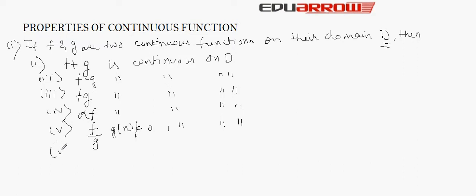The sixth point says that if we take the reciprocal of function f, provided that f(x) should not be equal to 0, then also the function will remain continuous on its domain d.